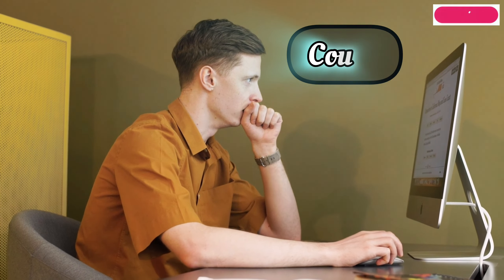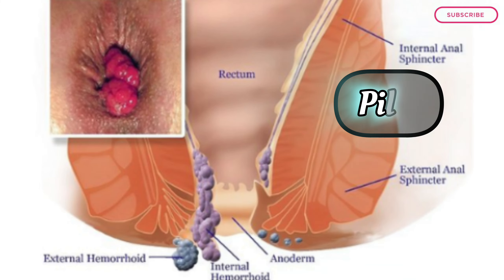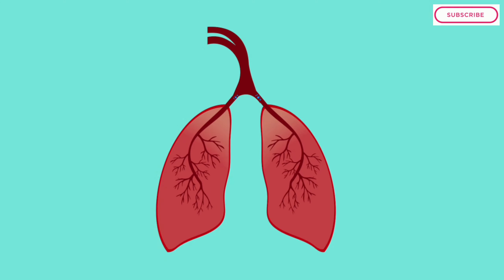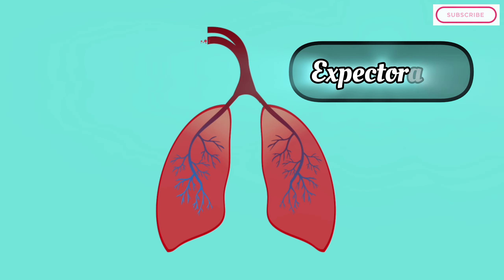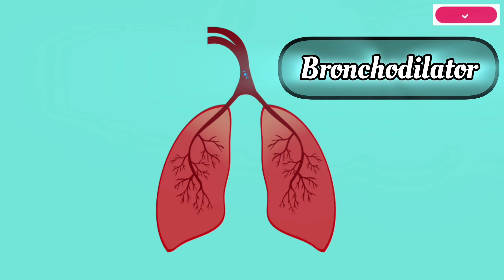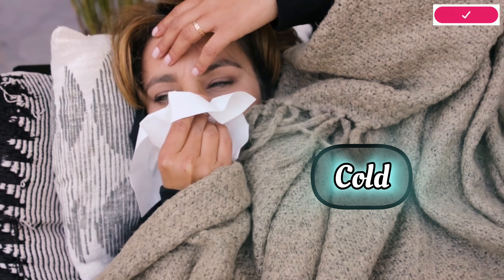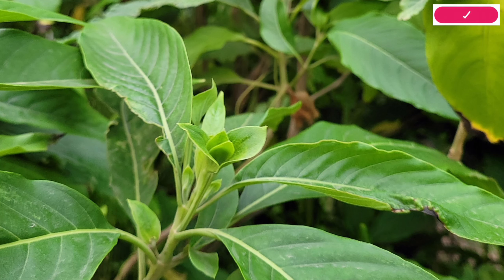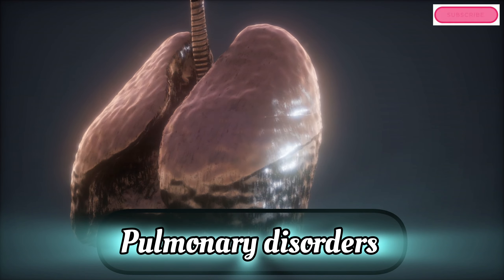Uses: The leaves of Vasaka are used to treat cough, asthma, fever, tuberculosis, piles, jaundice, and bleeding gums. Pharmacologically, it is used as an expectorant and bronchodilator. Its decoction has the ability to treat cold and rheumatism. The extract of leaves, bark, and flowers is used to treat bronchial asthma and pulmonary disorders.